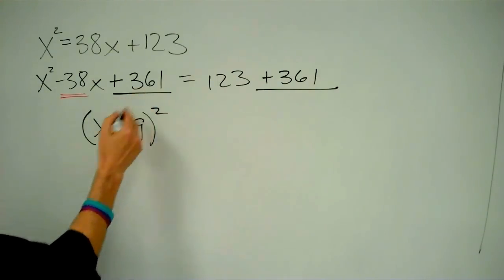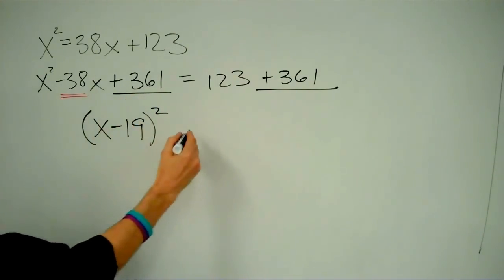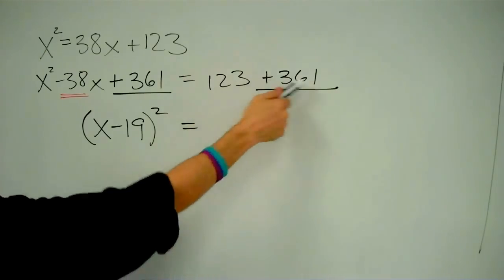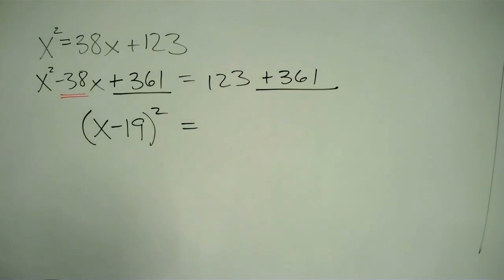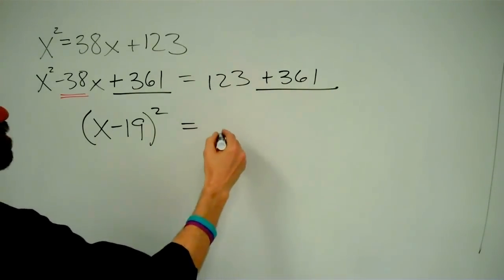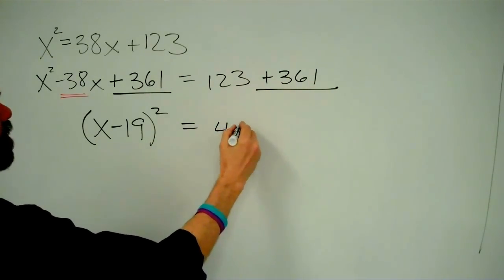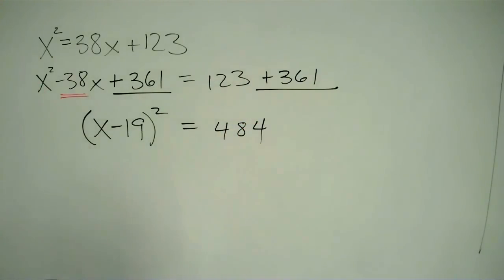On the left side of my equation, this is just x minus 19 squared. And on the right side, I've got to add up 123 plus 361. So that's going to be 484.